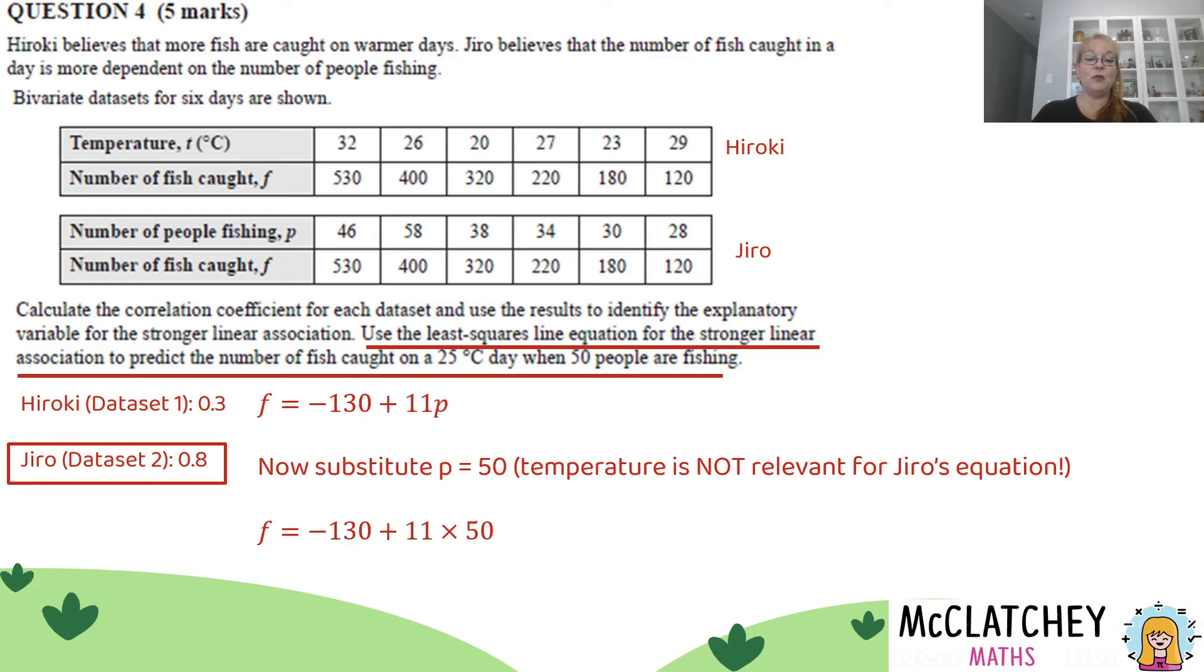And then you're going to find that there is 420 fish. Don't write 420 with decimal places. You want whole numbers of fish here. And you will get that final mark for predicting the number of fish caught.